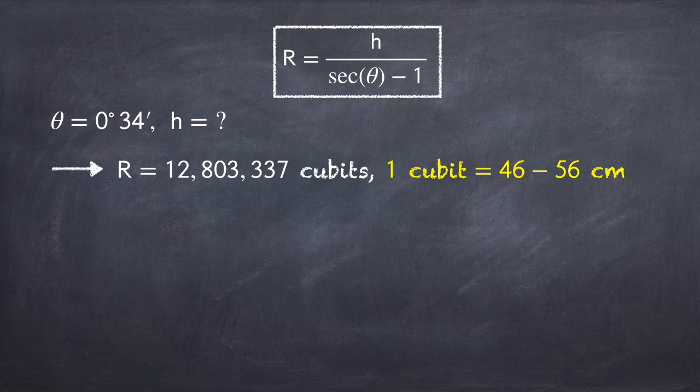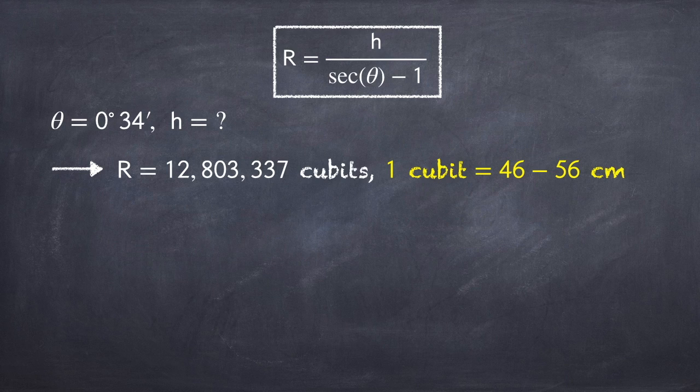One qubit is somewhere between 46 to 56 centimeters, and we don't really know because that's debated among historians. This was a problem we had with Eratosthenes measurements as well.